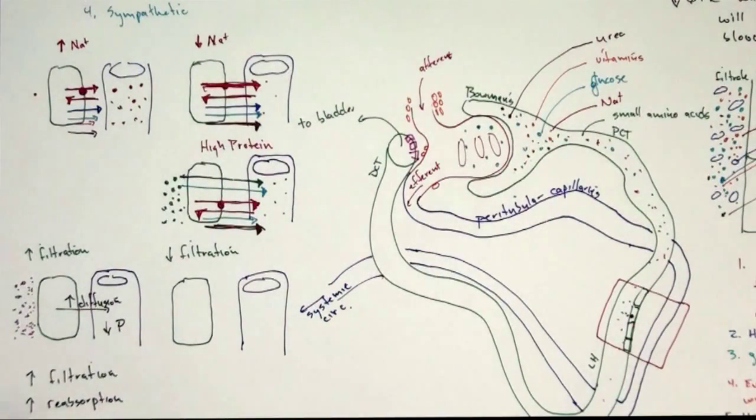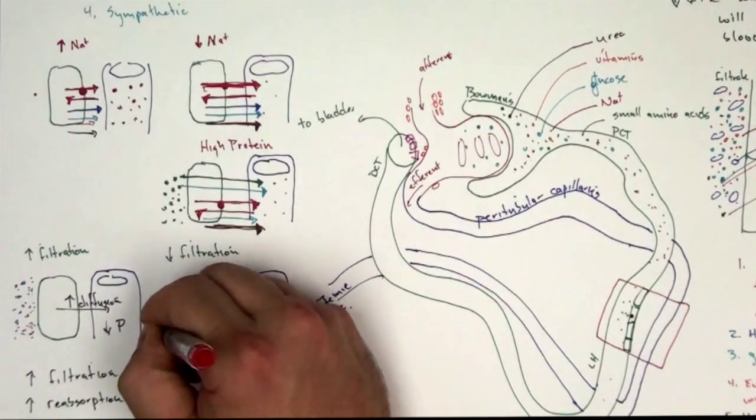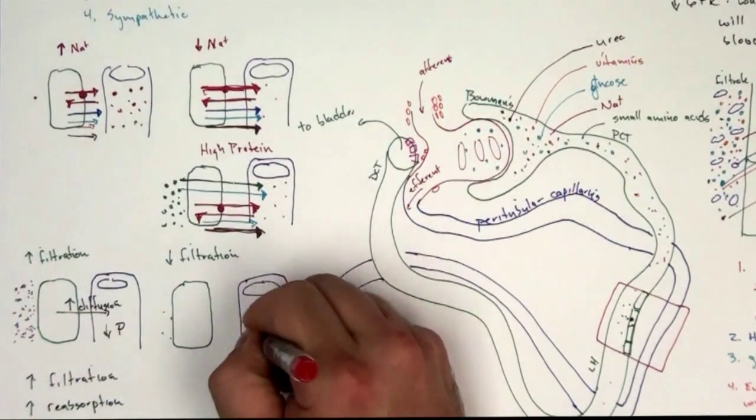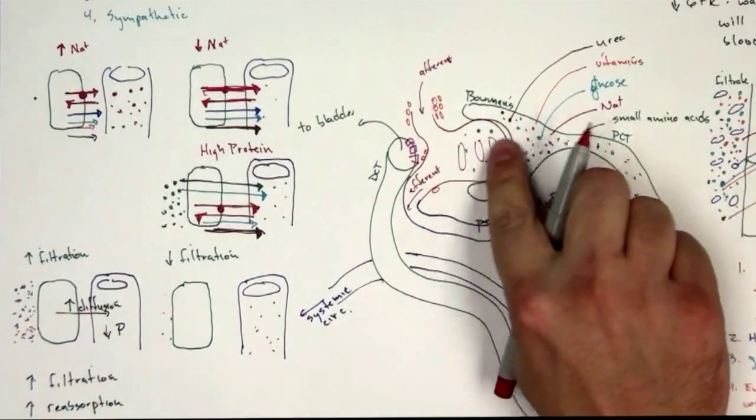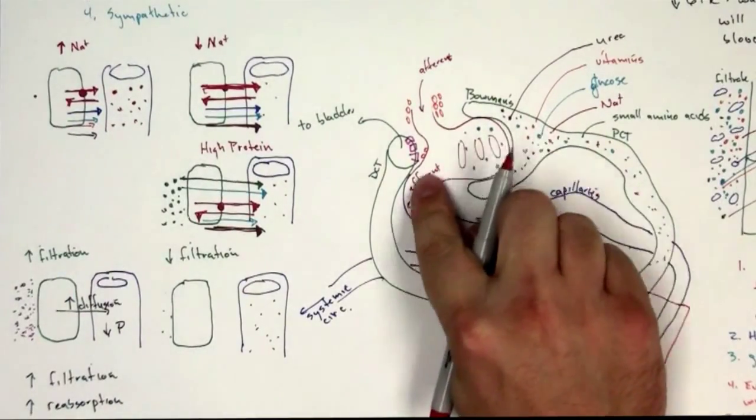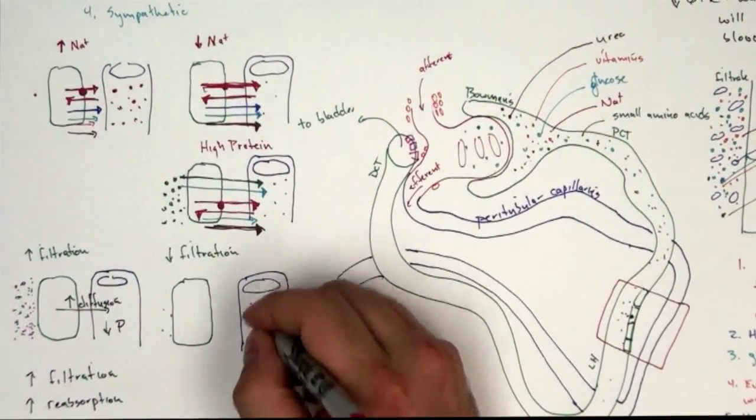If we have low filtration, it means we have less stuff over here and there's a lot of it left behind here. So if there's less filtration, it means everything stayed back here. So we can draw it already in the paratubular capillary.